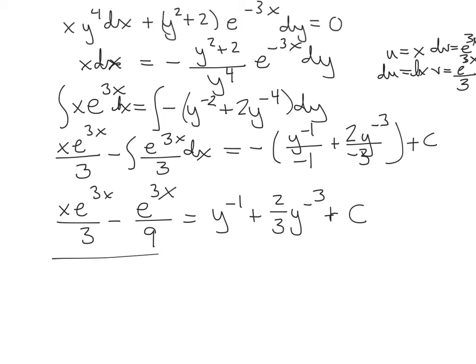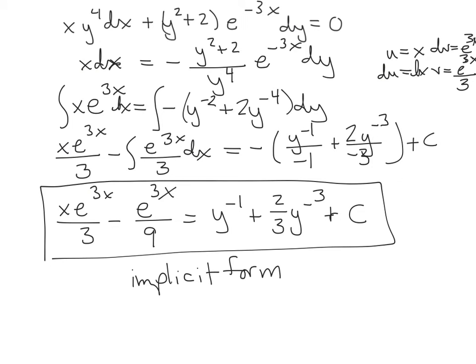Let me clean up the right-hand side because I've got a bunch of negatives. How about y to the negative 1 plus 2 thirds y to the negative 3. Now, I'm going to leave this solution just like this. And this is called the implicit form, or implicit solution. The reason is that we're going to leave it in this form because we can't solve for y. Totally impossible to get y all by itself without another y on the other side.